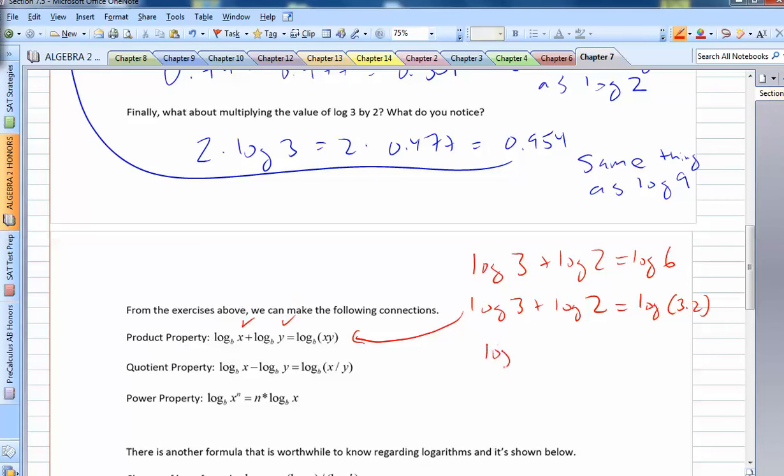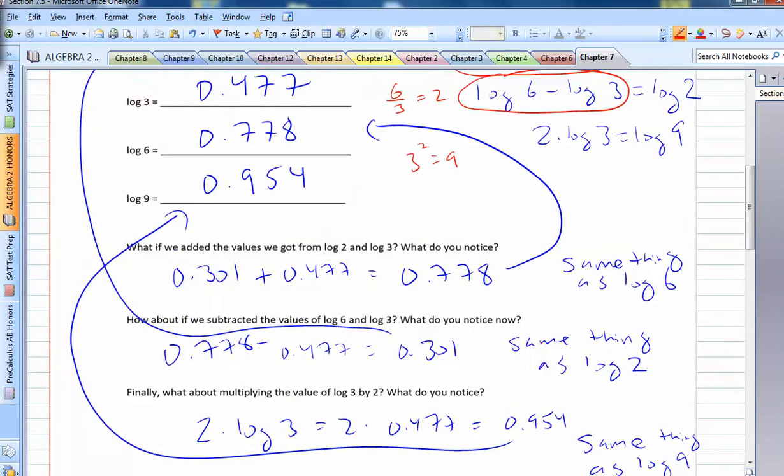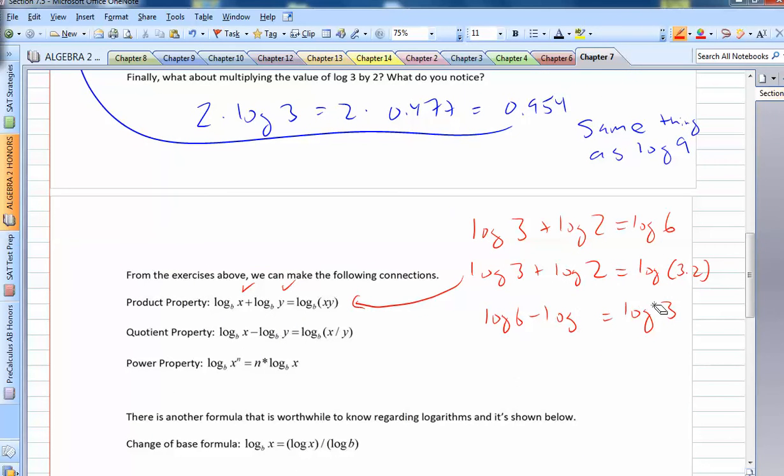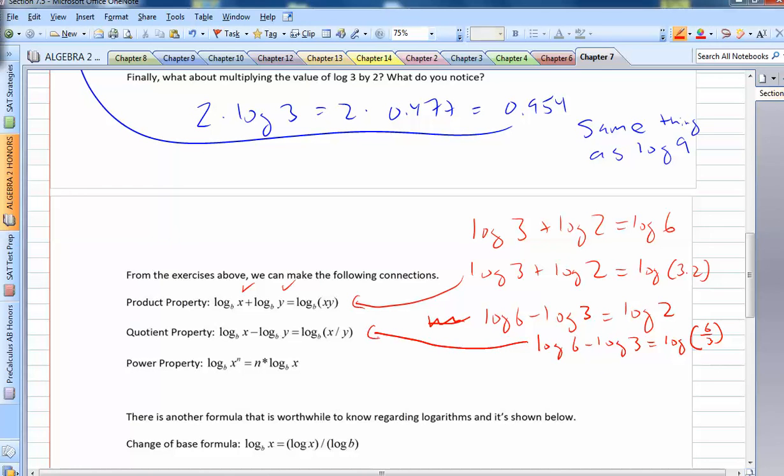We also saw that log 6 minus log 3 equals log 2. Well, of course, 2 is the same thing as saying 6 divided by 3. So that takes us to the next property, which is the quotient property. So if I have two logs being subtracted together, as long as I have the same base, I can condense it as one log as long as I divide x and y. So that's another property.